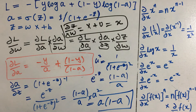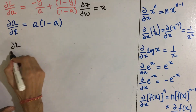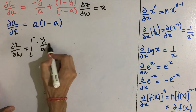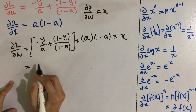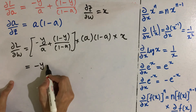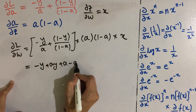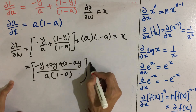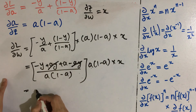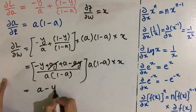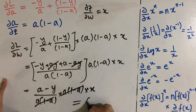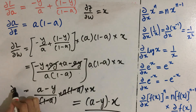We will multiply all three terms to find del l by del w. Multiplying and simplifying the expression: we get minus y plus ay plus a minus ay, all upon a times (1 − a), multiplied by a(1−a) and x. The a(1−a) terms cancel, leaving a minus y upon a. Then the remaining a terms cancel, giving us a minus y times x. This is our final del l by del w.